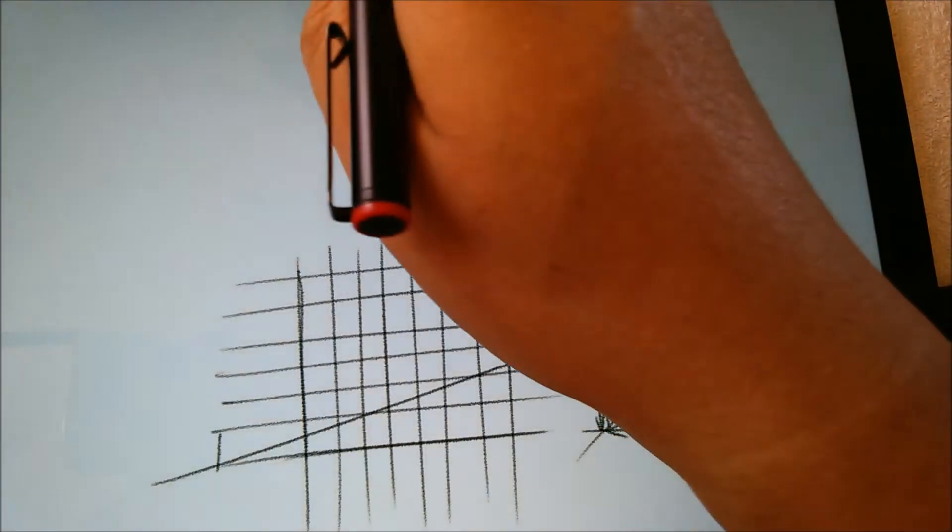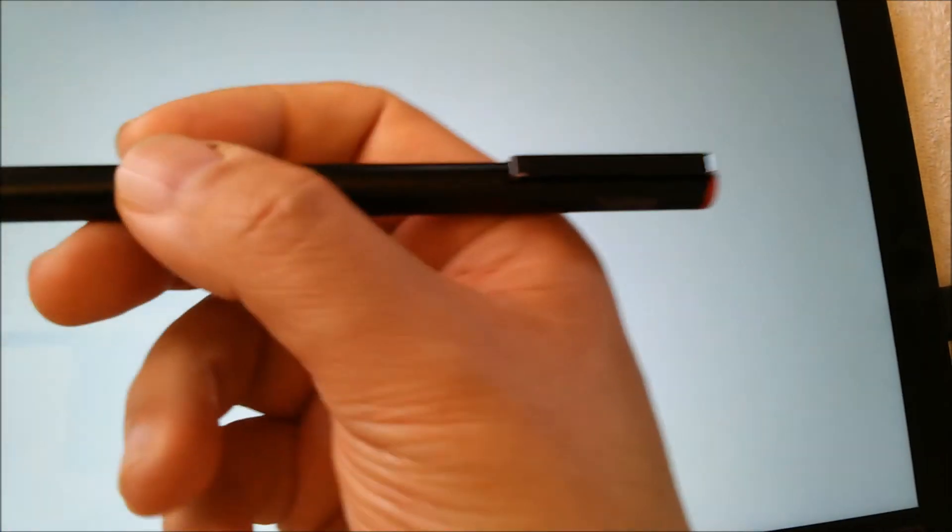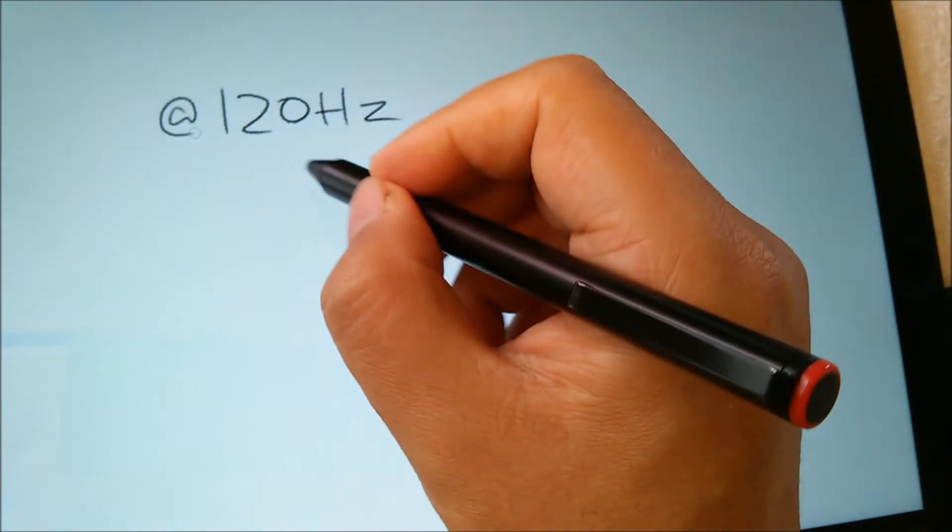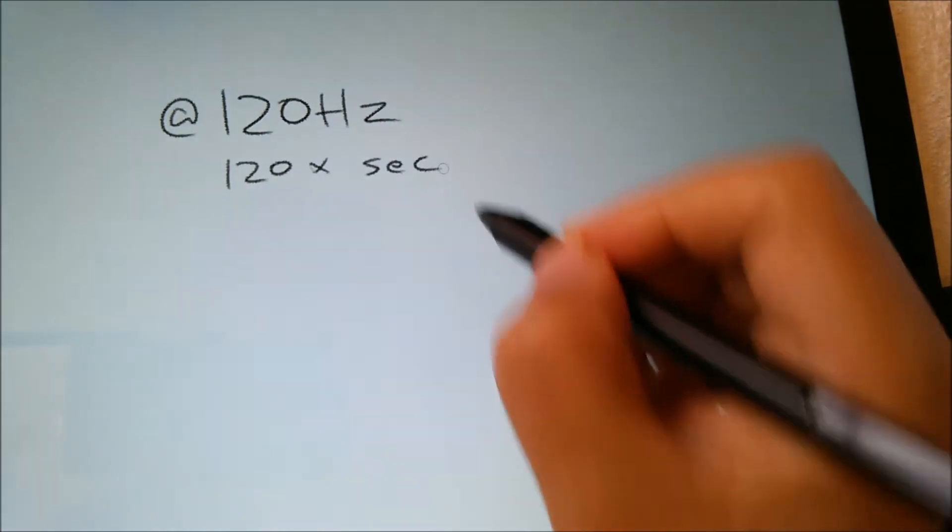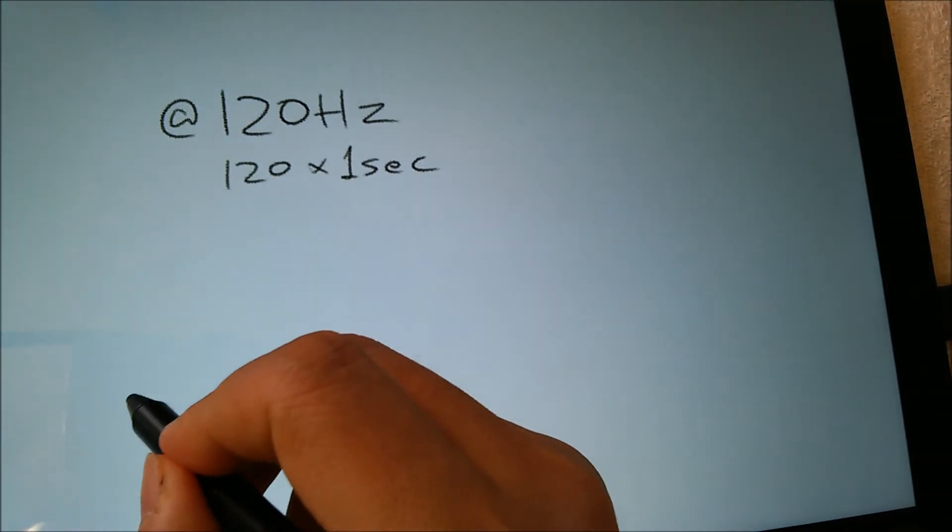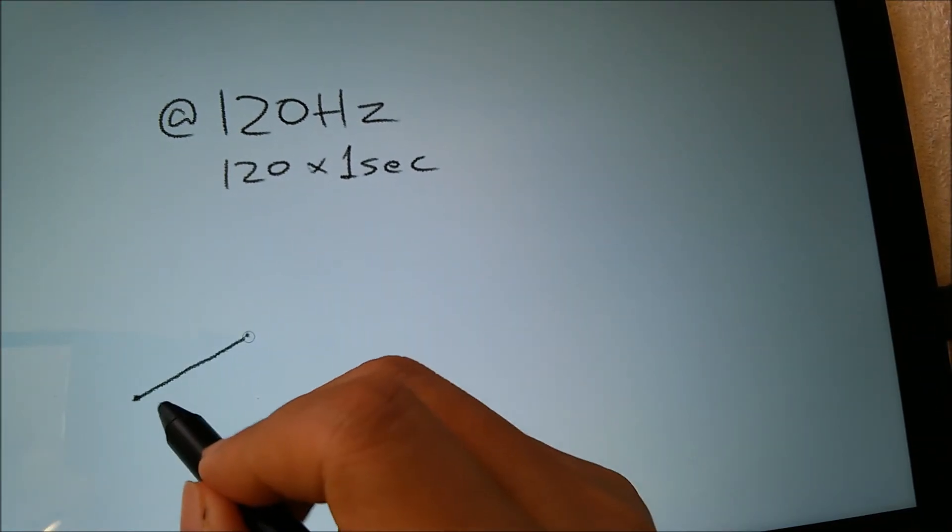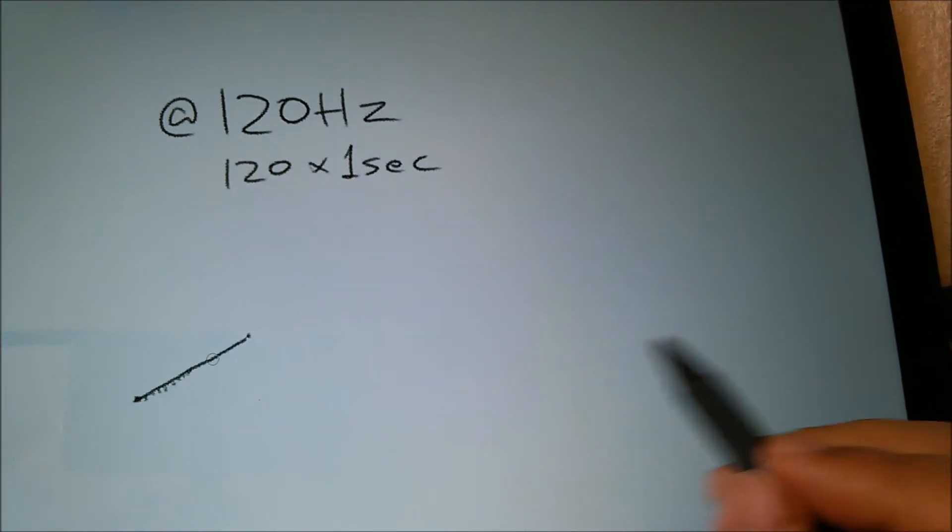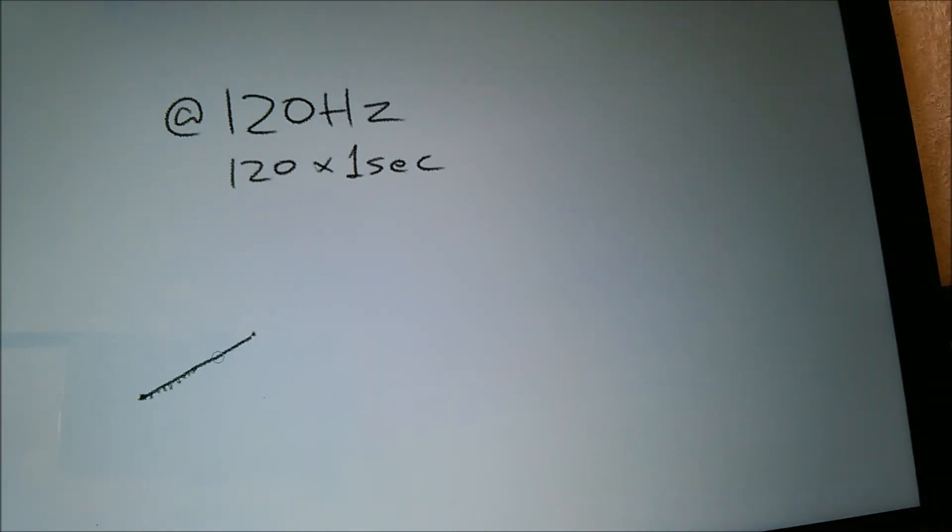Another problem with drawing slowly on a digitizer like this is that the pen communicates with the board at 120 hertz. What that means is that 120 times per second, each second it's telling the digitizer where it is 120 times. If you have to draw a line that takes a second to draw, that means this line consists of 120 separate data points. It's going to take all the data points and try to incorporate it into the drawing, so it's going to have more data points. The chances of being straight are less likely.